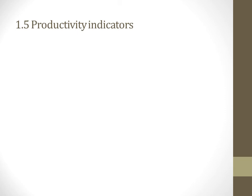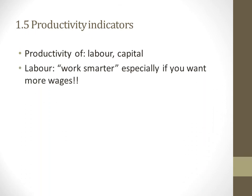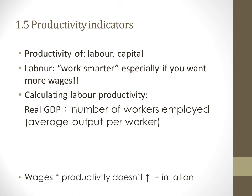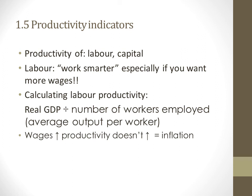Productivity indicators: productivity of labor or capital means working smarter. Productivity is being able to produce more with the same amount of inputs. Labor productivity is calculated as real GDP divided by the number of workers employed — this gives the average output per worker. If wages increase but productivity doesn't, that's a problem — it results in inflation, because business owners pass higher wage costs into the price of the product.